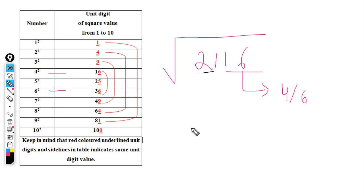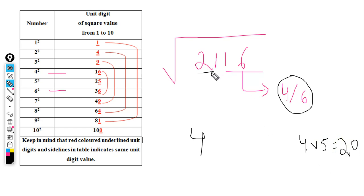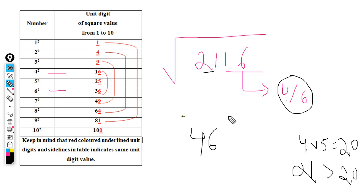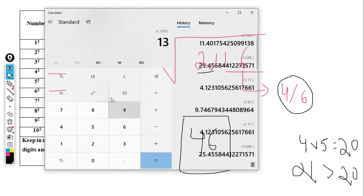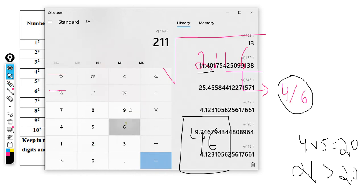5 squared equals 25. So for this example, we choose 4. The multiplication is 5 times 4 equals 20. The number twenty-one is given, so the answer for the square root comes out. The square root here is 46. The correct answer is 46.